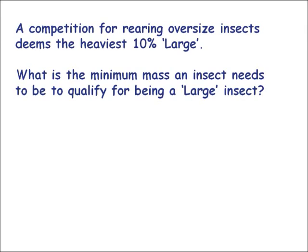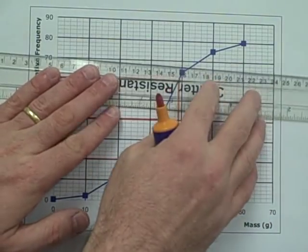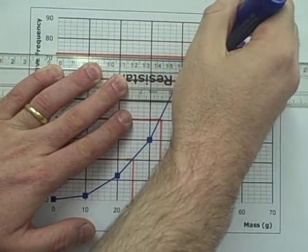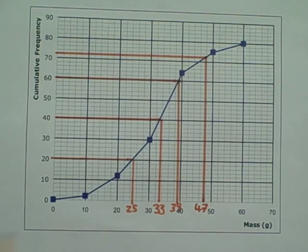Since there are 80 insects, only 8 will be deemed to be large. As these are the heaviest 8, we read off the mass which corresponds to a cumulative frequency of 72. The minimum mass an insect could be to be deemed large is 47 grams.